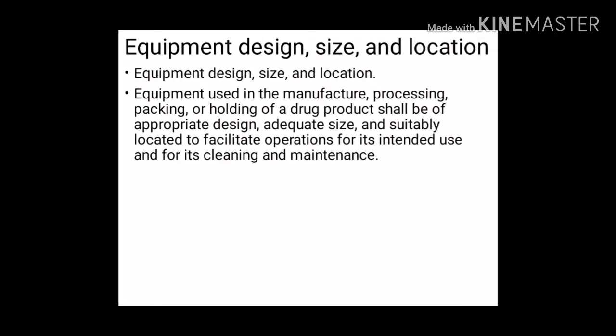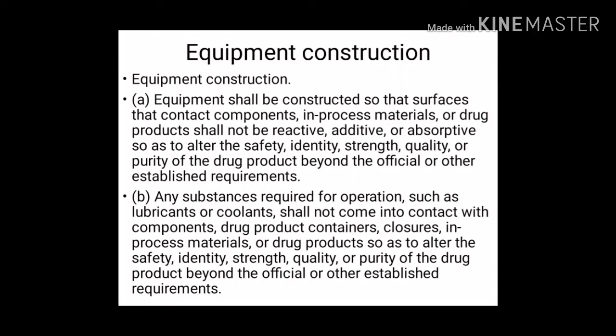Equipment Design, Size, and Location: Equipment used in the manufacture, processing, packing, or holding of a drug product shall be of appropriate design, adequate size, and suitably located to facilitate operations for its intended use and for its cleaning and maintenance. Equipment Construction: Equipment shall be constructed so that surfaces contacting components, in-process materials, or drug products shall not be reactive, additive, or absorptive so as to alter the safety, identity, strength, quality, or purity of the drug product beyond official or other established requirements. Any substances required for operation such as lubricants or coolants shall not contact drug product components so as to alter product quality.